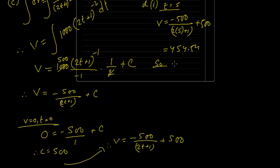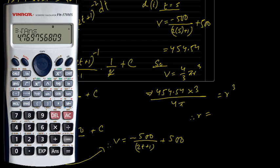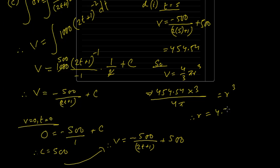So v equals 4 third pi r cubed. v is 454.54. If I put the 3 on the other side, into 3, if I send 4 pi downstairs, 4 pi equals minus 500, r cubed, therefore r equals, let me calculate this. The answer is 4.77.